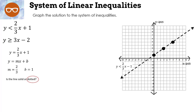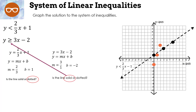Now graph the second: y = 3x − 2. Also in slope-intercept form — slope = 3 (written as 3/1), y-intercept = −2. Graph −2 first, then go up 3 over 1, up 3 over 1. Is the line solid or dotted? It's solid because the original inequality is 'greater than or equal to.'